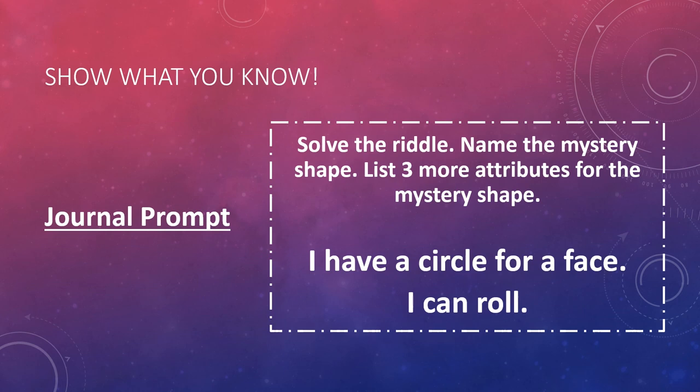When you are confident and comfortable, move on to the show what you know section in Schoology and either complete the journal prompt on a piece of paper or use a digital discussion board to type your thoughts in the comment section or record your ideas using a microphone button. The journal says solve this riddle: name the mystery shape, list three or more attributes for the mystery shape. Here are your clues: I have a circle for a face, I can roll.